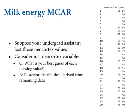Here's the idea. You have to suppose your undergrad assistant lost those neocortex values at random. Now they're not actually lost at random here because they're predominantly in primates that aren't as glamorous to study — that's how it goes with primatology. I like lemurs, but they're not as career-boosting as certain other primates. Here's the way imputation works: you consider the neocortex variable and ask, what is your best guess of the missing value? The answer is the posterior distribution from the remaining data.